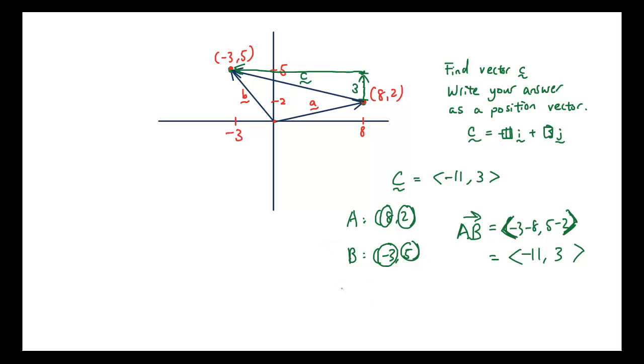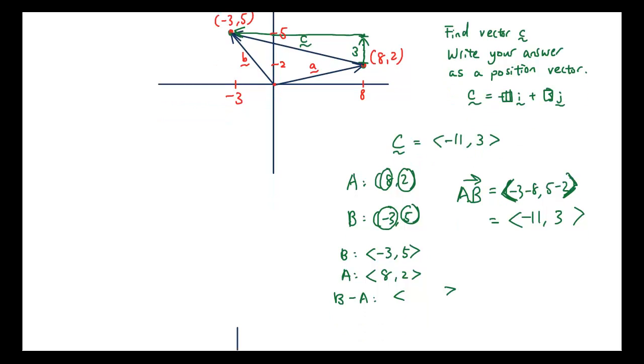Vector B is negative 3 and 5. Vector A is 8 and 2. So B minus A is therefore negative 11, 3. Which is what we have. Same as vector C.